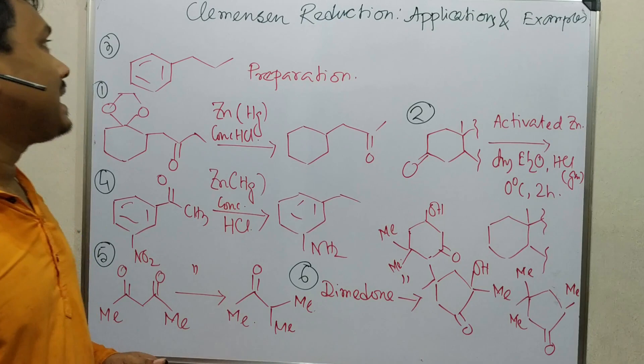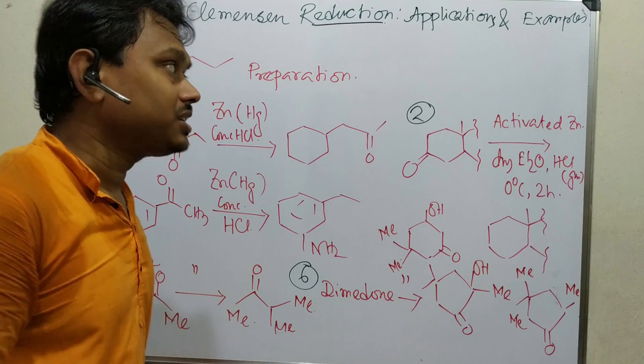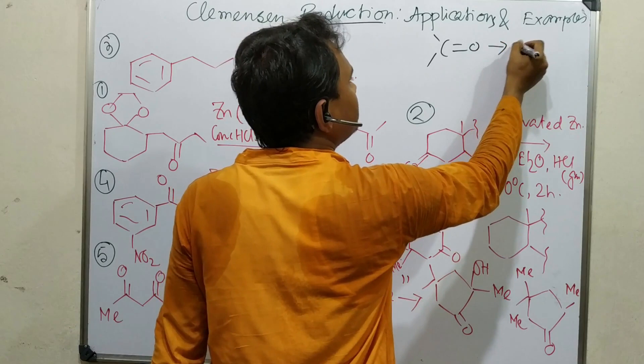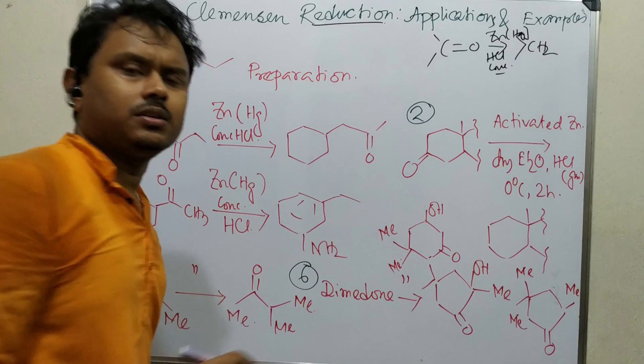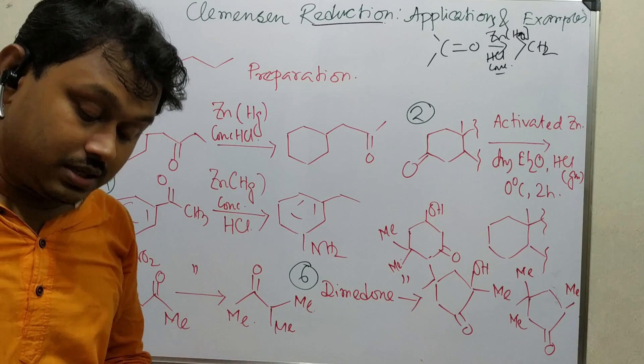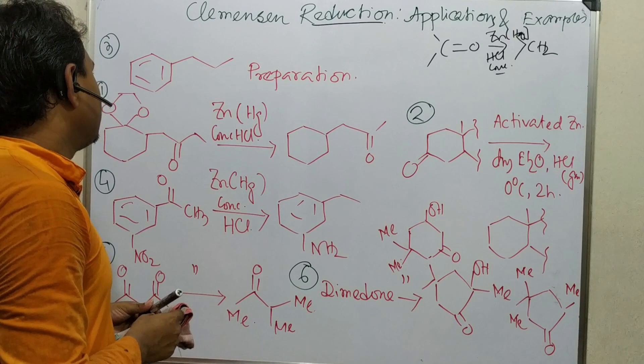Let's start. This is a reduction reaction — Clemmensen reduction means reducing a carbonyl group to CH2 in the presence of zinc amalgam and concentrated HCl. I have explained everything related to the zinc-mercury amalgam, alternate uses of mercury, and so on in the previous video, so please go and see that for clarity.